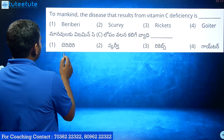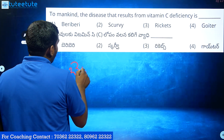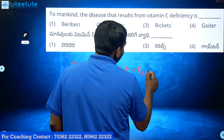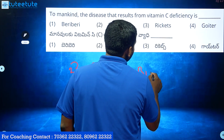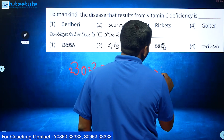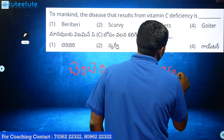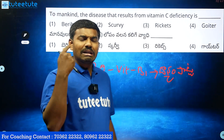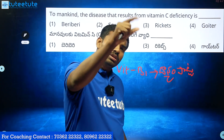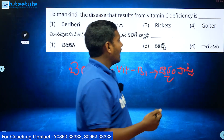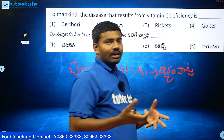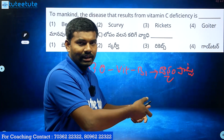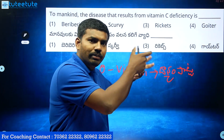The first option is Beriberi. Beriberi is caused by Vitamin B1 deficiency. For example, after cooking rice, Vitamin B1 is lost in the process.